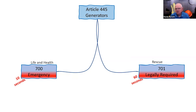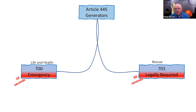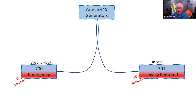Once the fire department shows up, we're into Article 701 territory — rescue operations. A fireman needs to get into that elevator, put the key in, and make the elevator operate. We may need certain ventilation systems operating, communication systems, and so on. When we talk about 700 and 701, they are very closely tied together.